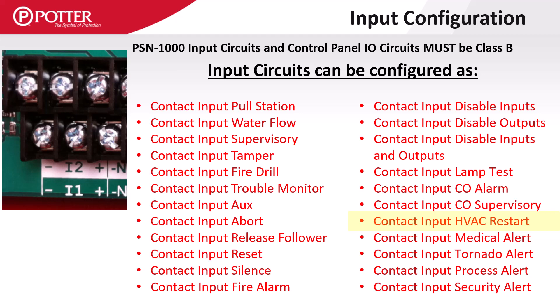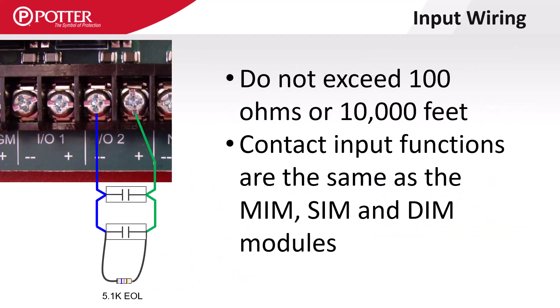HVAC Restart is used to meet New York City code requirements that HVAC units remain shut down until manually restarted. For this application, this input type is assigned to the same zone as an HVAC shutdown relay. Contact Input Alerts provide the ability to monitor ancillary devices not typically associated with fire alarms. These are the only point types that can be set to not activate the panel piezo buzzer. The limiting factor associated with any Potter IDC circuit is that it needs to be less than 100 ohms of wire resistance or less than 10,000 feet.